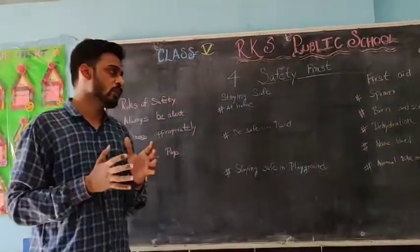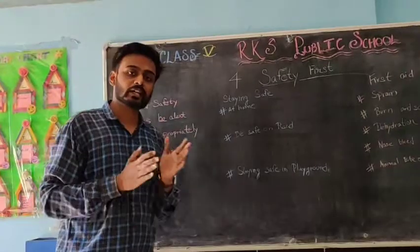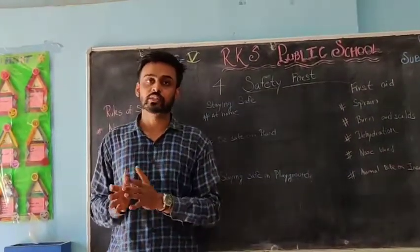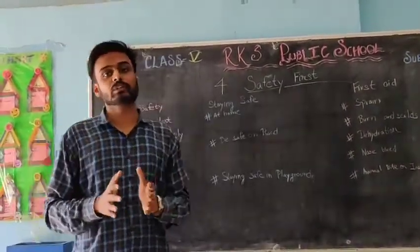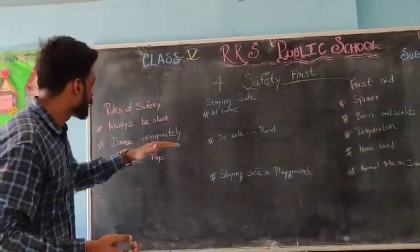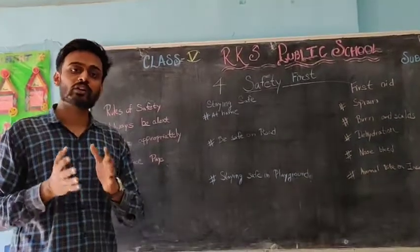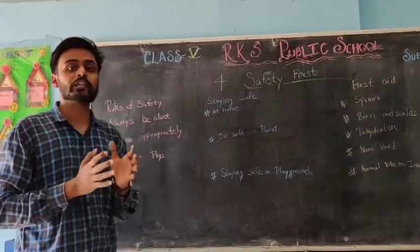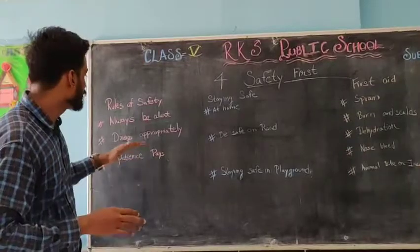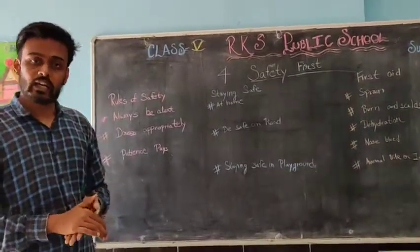What are the rules of safety? These are: always be alert. Always be alert on the road by following traffic rules, so that you don't get into any accident. Rest appropriately. While going on any path or riding a cycle, you should not wear loose clothing, as it may get caught in the wheel and you can invite an accident.